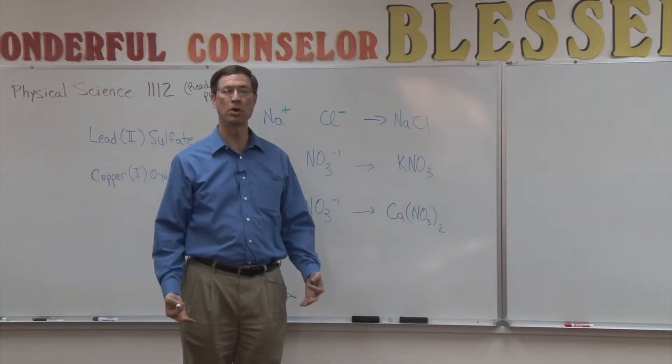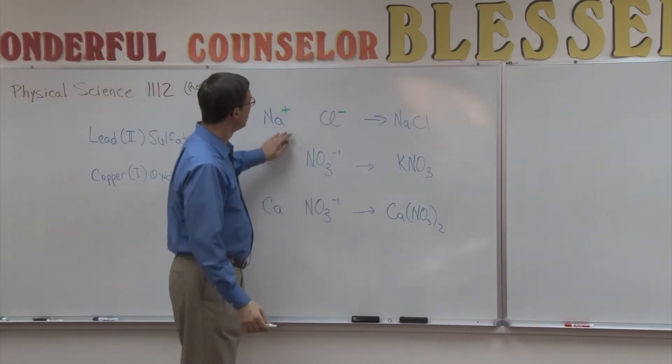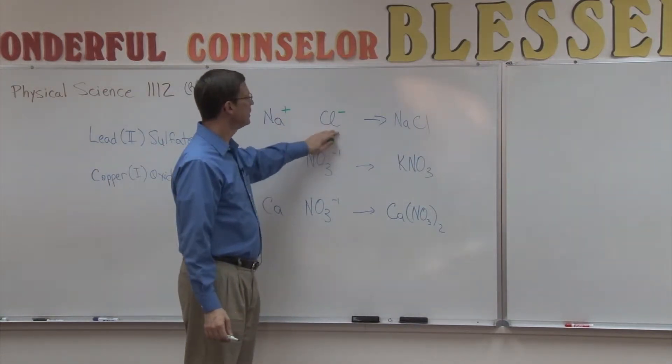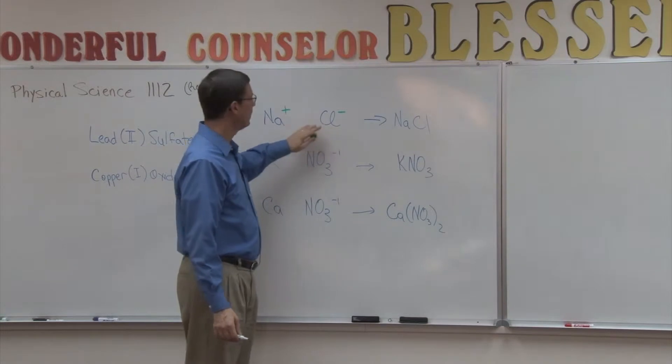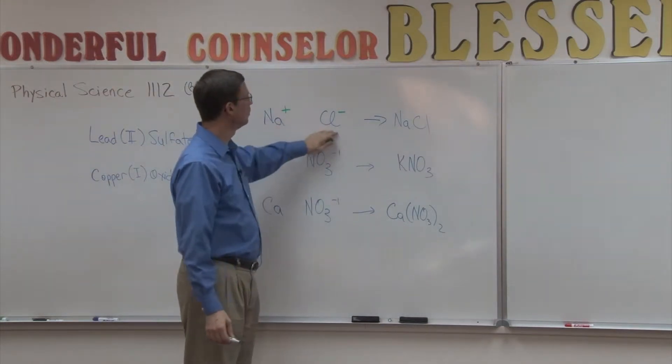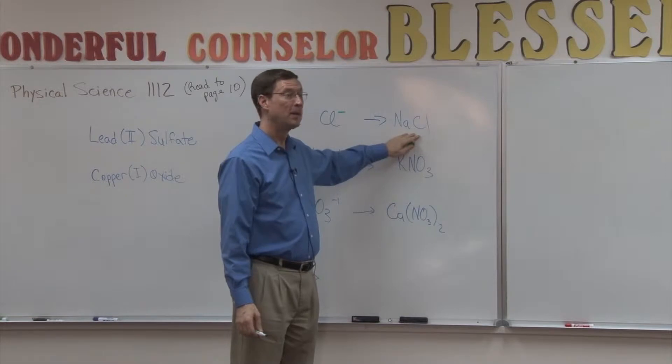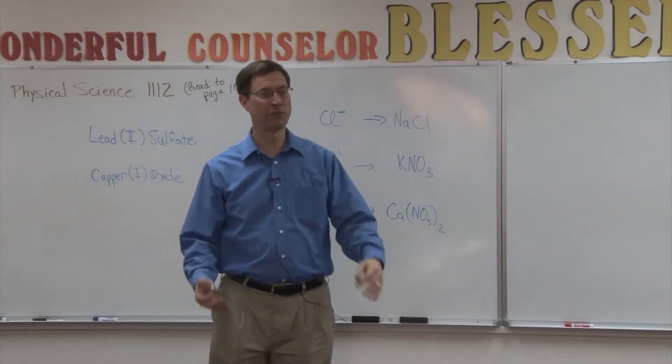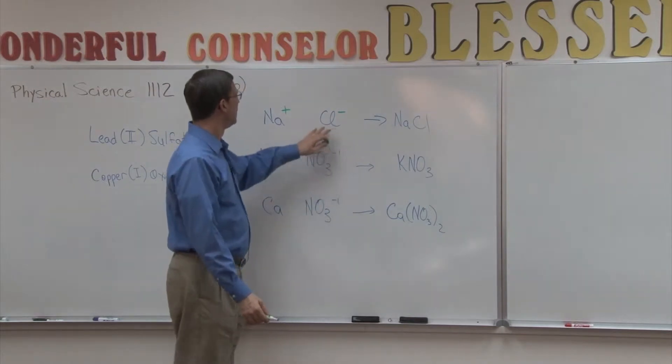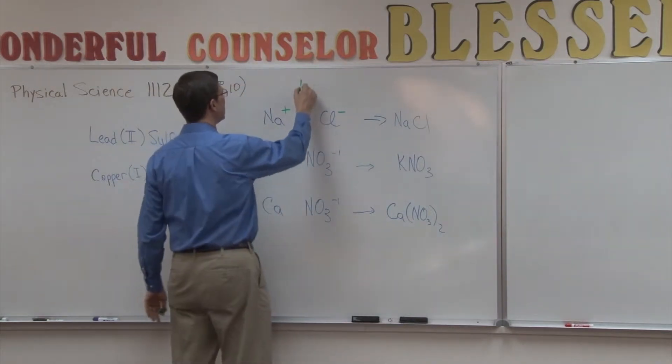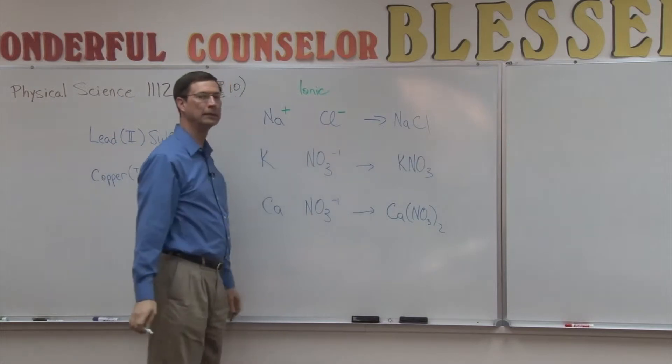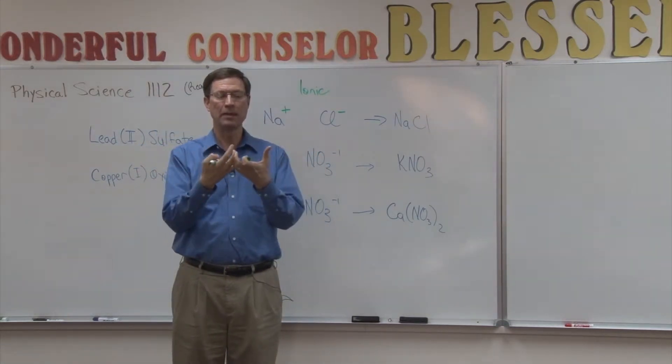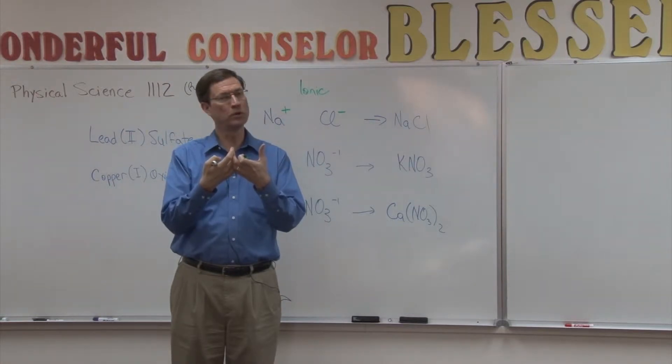Ion means a charged atom that's not neutral anymore. So we have a positive ion and a negative ion bonding together. In this case, sodium plus chlorine becomes sodium chloride. Sodium chloride is table salt. You're familiar with that. You put it on your food. This is called ionic bonding. The opposites attract and they bond to each other. It's a very strong bond.